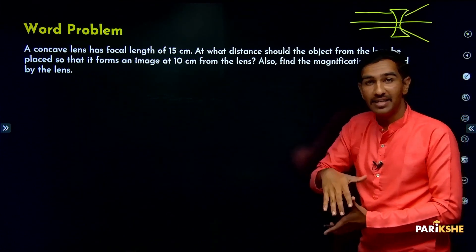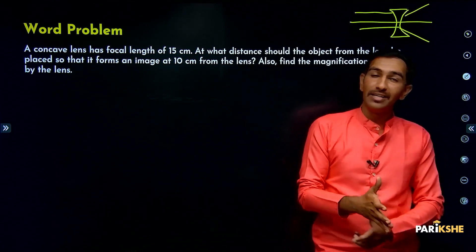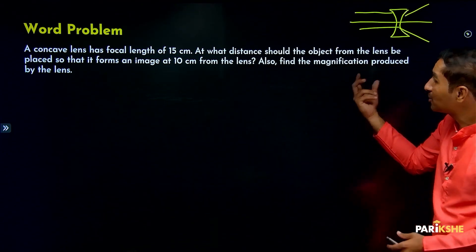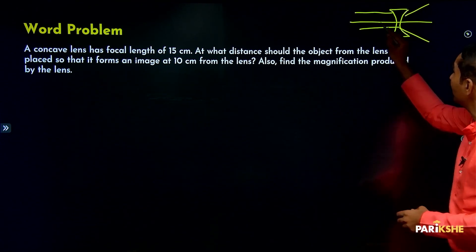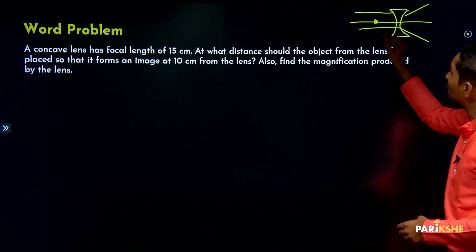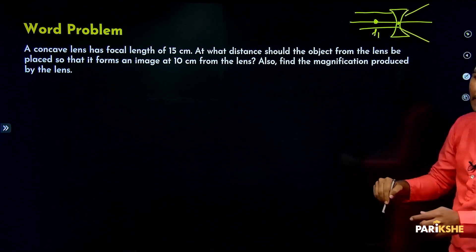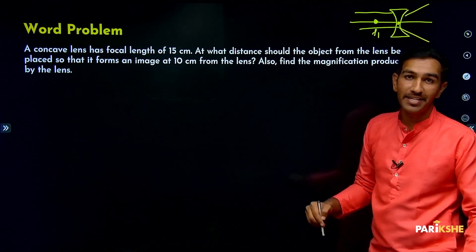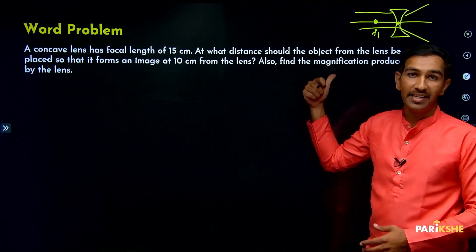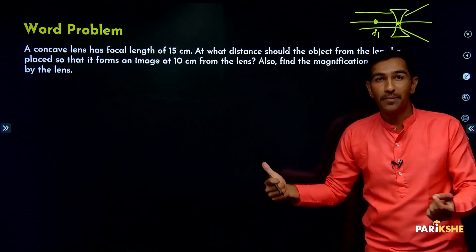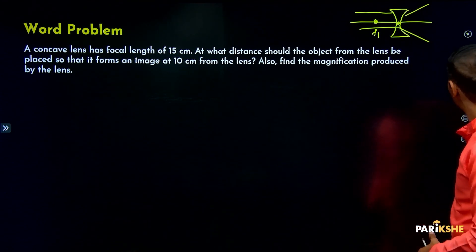Because it is a diverging lens, a real image cannot be formed — real image formation is not possible. The refracted rays appear to be coming from the focus F1. F1 is to the left side of the optic center, so it is always negative. For mirrors, the reference point was the pole; for lenses, the reference point is the optic center.